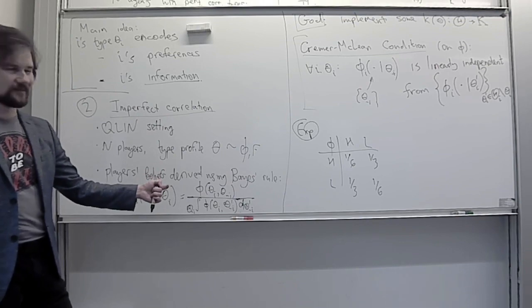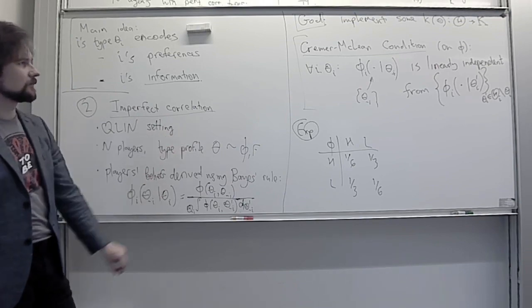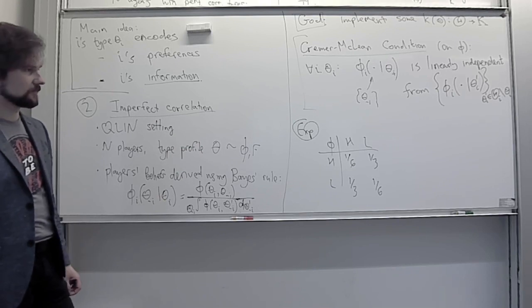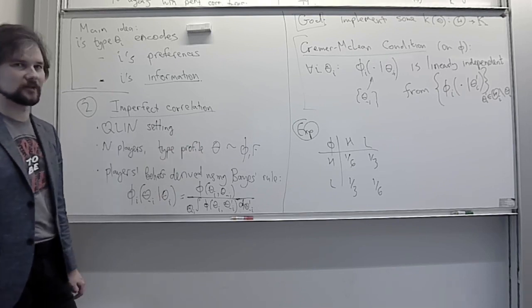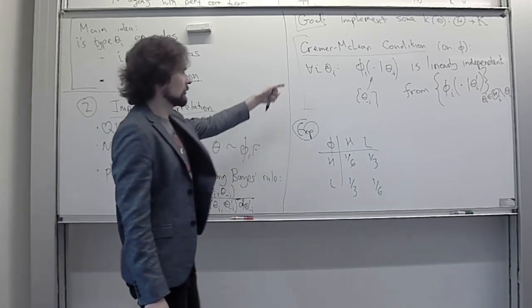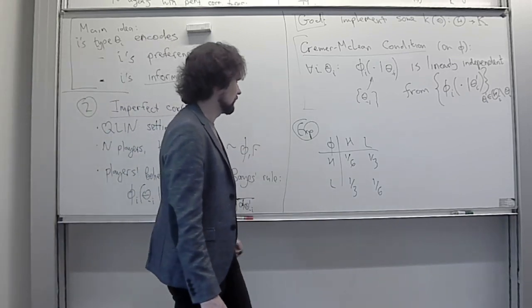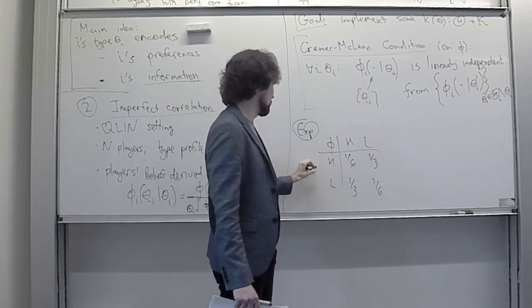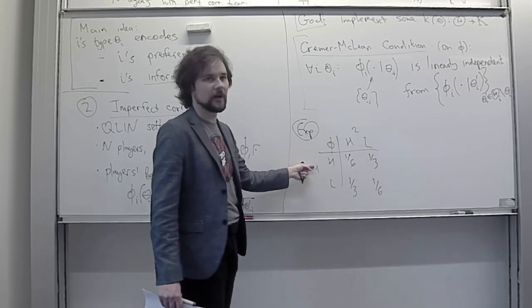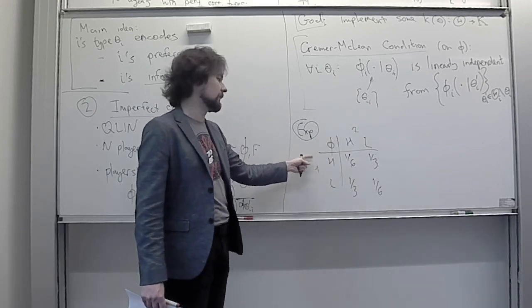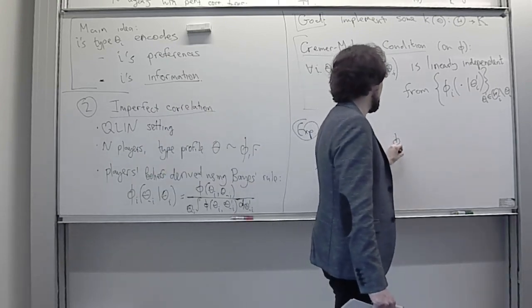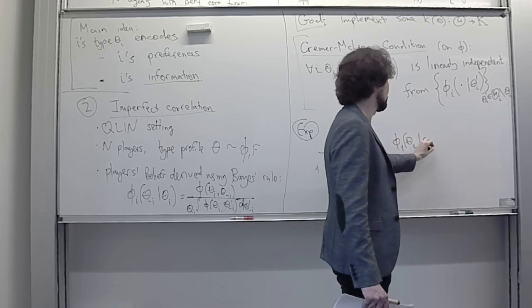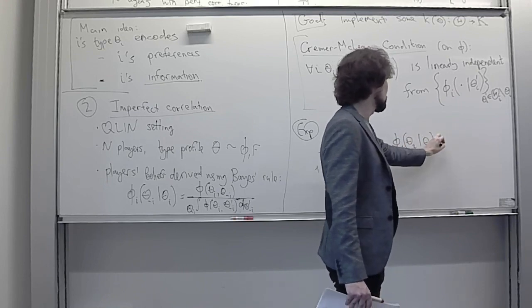One way is to look at the full rank of this matrix, and those who know what it means can see this matrix is actually full rank. But if we apply the condition literally, we need to derive players' beliefs. Let's look at player one. We want to find phi_1, the beliefs of player one regarding theta_2 given theta_1 — that is, the pair of probabilities player one assigns to player two being of high type or low type.